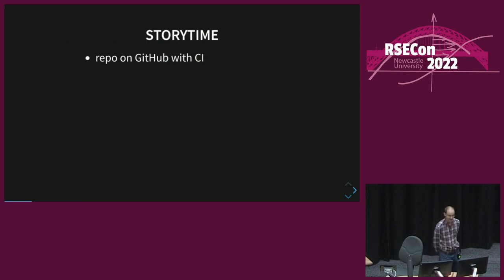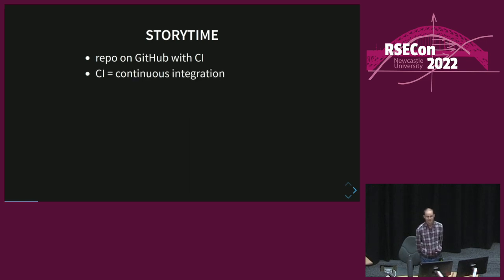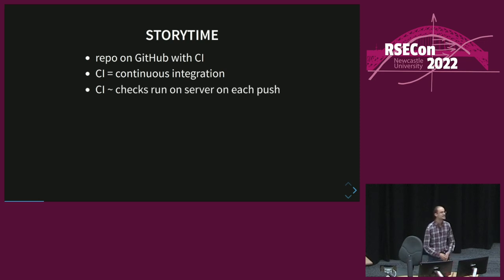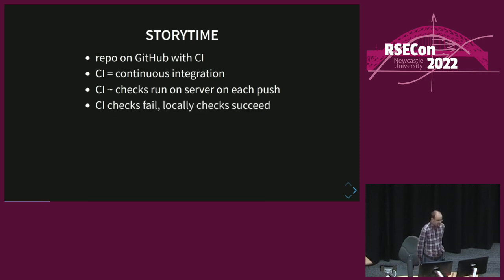Let me begin with a story. I made up the story, but it's not too far from the truth of what I had to endure. So I had a repo on GitHub with CI set up. CI is for continuous integration — we can just say CI is some checks that run on a server whenever you push to your Git repo. The whole thing was working fine for a while, and then something happened.